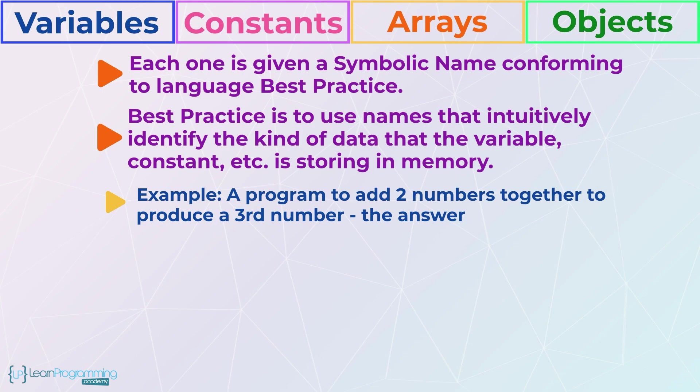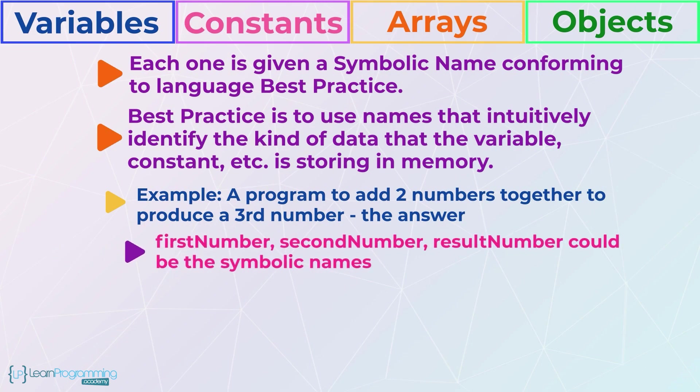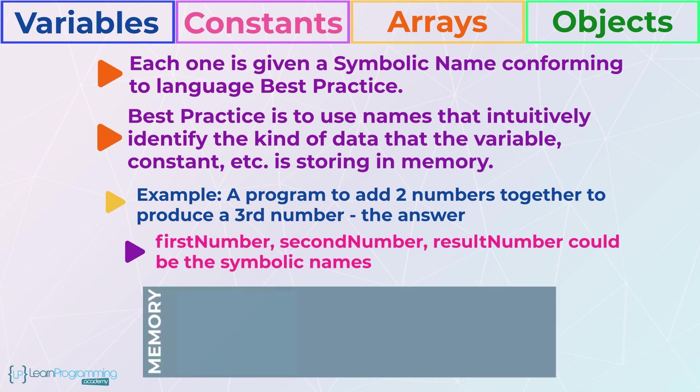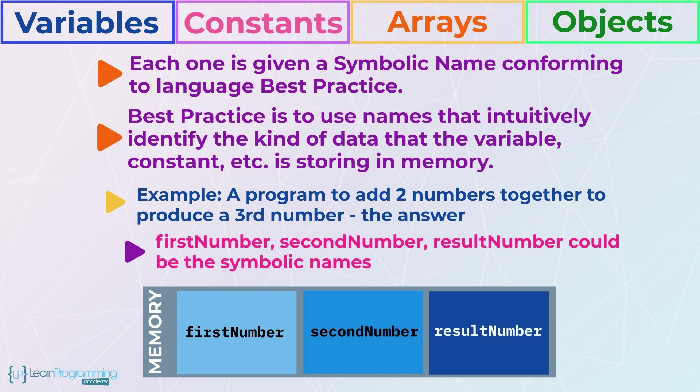For example, if I want a program to store two numbers and add them together to produce a result, then I could create three variables naming them first number, second number and result number. Keeping this explanation simple, these three named variables will reserve three different memory locations to hold the two numbers to be added and a third memory location to store the result of adding the two numbers together.